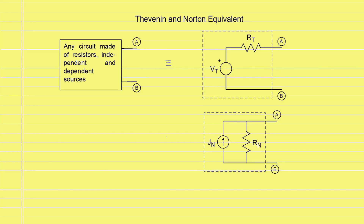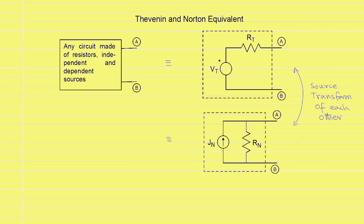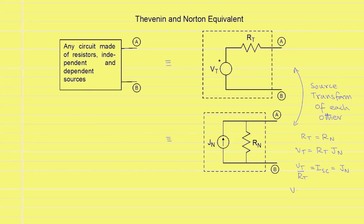The circuit on the left is also equivalent to a second circuit on the right-hand side, which consists of a current source in parallel with a resistor. Here, the value of the current source is Jn, standing for the Norton current, and the value of the resistor is Rn, standing for the Norton resistance. Since the two circuits on the right are equivalent to the circuit on the left, the two circuits on the right-hand side are also equivalent to each other. In fact, they are the source transformation of each other. For source transformation, the two resistance values must be equal, and the voltage source value VT equals the product of the resistance and the current source value. From the Thevenin circuit analysis, VT over RT equals the short circuit current ISC, which also equals the Norton current Jn. And the open circuit voltage VT equals Rn times Jn.